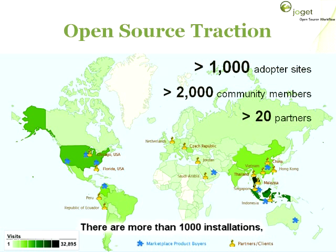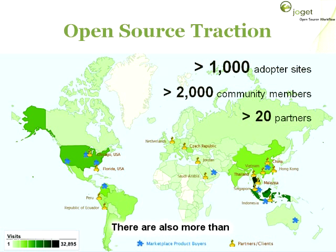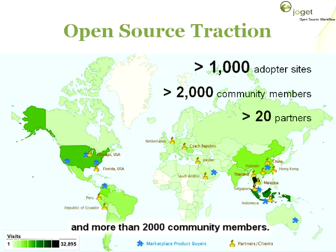There are more than 1,000 installations, with the darker areas like the United States, Southeast Asia and China indicating the highest rates. There are also more than 25 partners globally, and more than 2,000 community members.